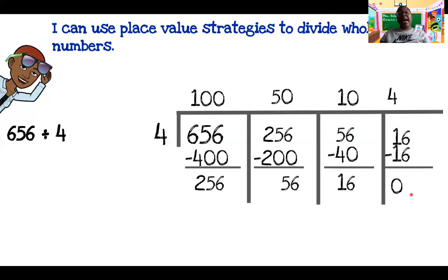So remember, guys, I told you, these are all partial quotients, which means we now have to put them together to get our answer. So 100 plus 50 plus 10 plus four equals 164.